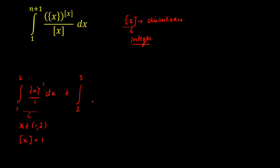From 2 to 3, when x is varying from 2 to 3, [x] = 2. Substituting, I get the integration from 2 to 3 of {x}^2 / 2 dx.